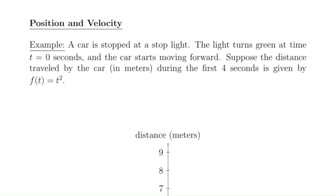In this video, we're going to talk about position and velocity, and we're going to begin with an example. Suppose a car is stopped at a stoplight, and the light turns green at time t equals zero seconds, and the car starts moving forward. Suppose the distance traveled by the car in meters during the first four seconds is given by f of t equals t squared.